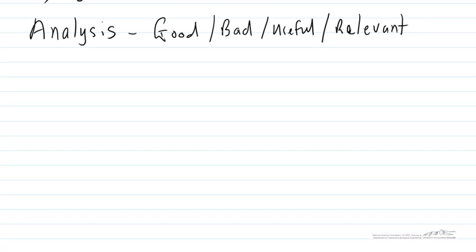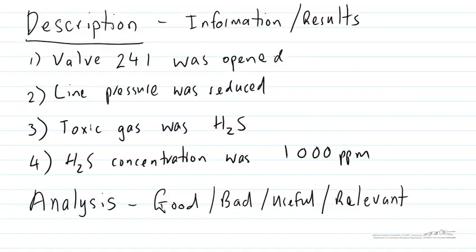In our analysis phase we're going to be considering the information and results that we've presented and saying if they're good or bad, useful or relevant. We could say that valve 241 being opened was a bad thing because it let the hydrogen sulfide escape. We could also say that it was a good thing because it reduced the line pressure. With the line pressure being reduced we can say that that is a good thing because it stopped the line from over pressurizing and having a catastrophic release.